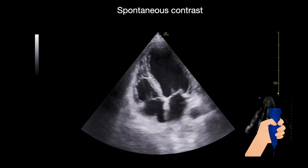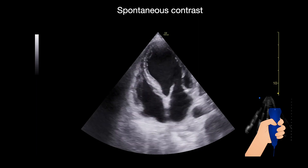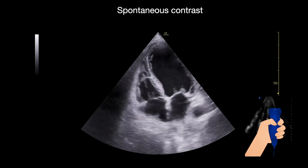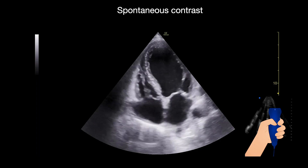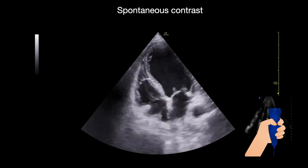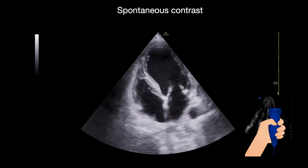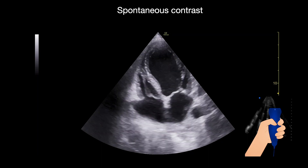Usually noted in the right atrium, it can be seen in any part of the heart, especially in a heart that has very low left ventricular ejection fraction.